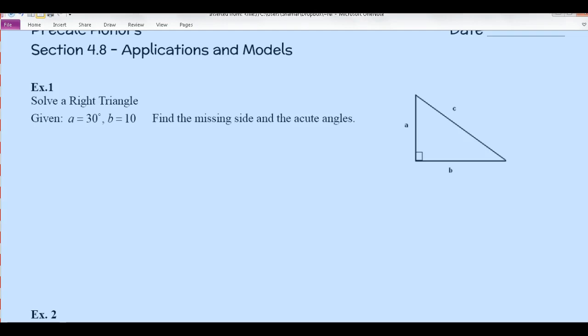For example 1, we have a small correction here on your worksheet. I have a lowercase a, but we actually want to make that a capital A to stand for the angle, and of course an angle is always opposite that side. So I'm going to go ahead and mark angle A as the 30 degree angle, and then side B has a length of 10. I like to mark up my diagrams as much as possible, and we're asked to find the missing side and the acute angles.